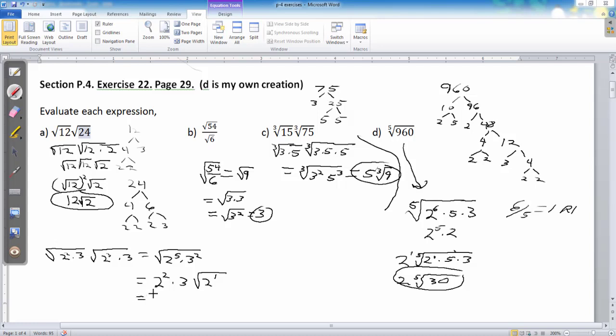So, I end up with 4 times 3, which is 12, square root of 2, same thing I had before. So, this is a nice shortcut method for doing these problems.